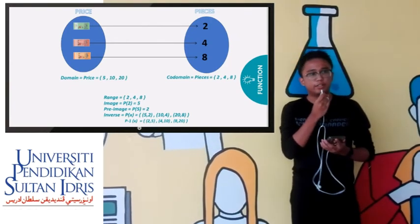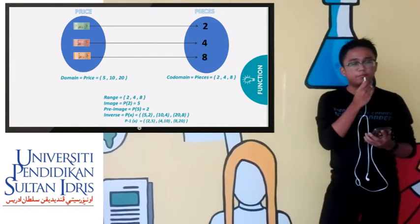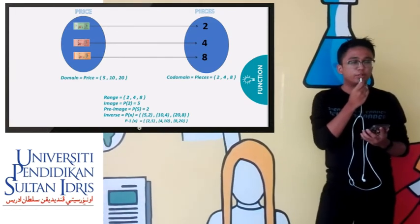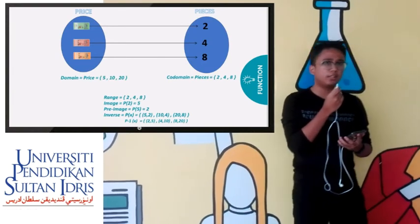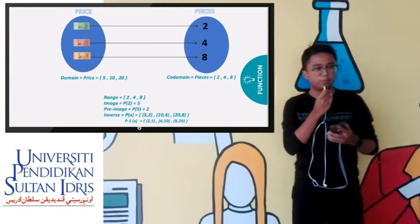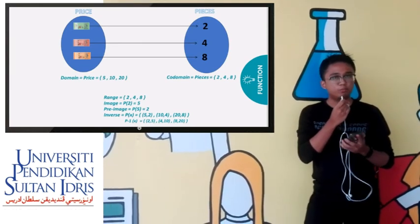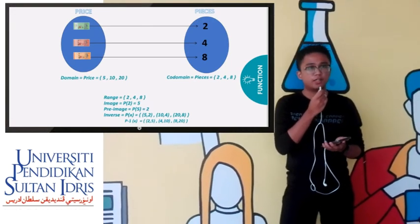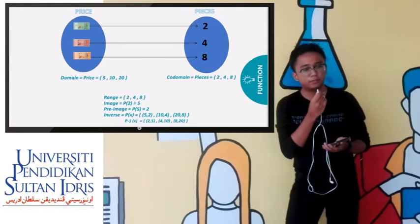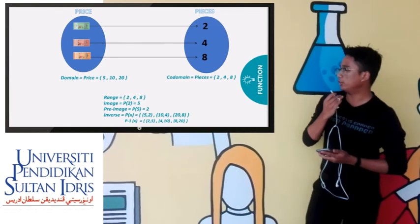For the inverse, the example I will give is: if you take five ringgit, you will get two pieces; ten ringgit, you will get four pieces; and twenty ringgit, you will get eight pieces. The inverse for the function is: for two pieces you will have to pay five ringgit, for four pieces you will have to pay ten ringgit, and for eight pieces you will have to pay twenty ringgit.